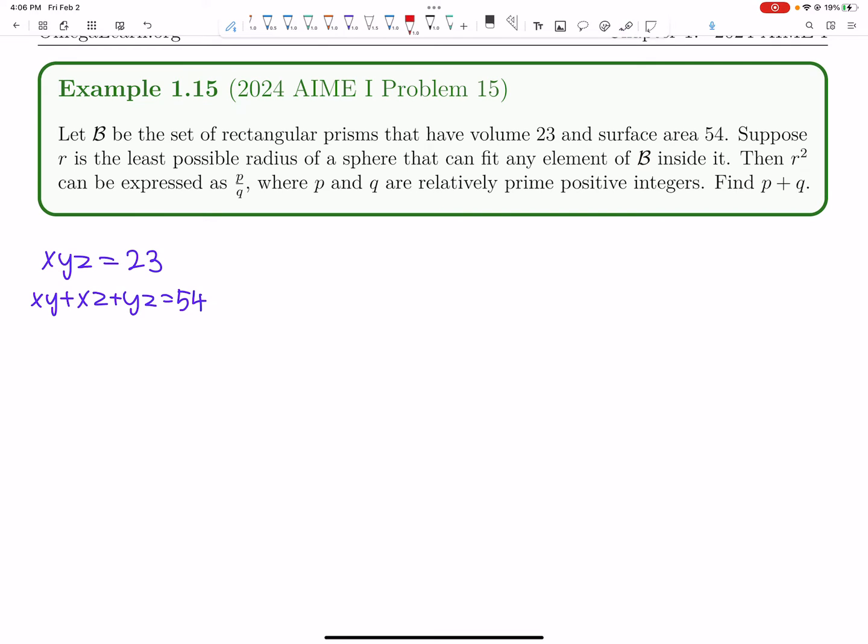so let's just consider any one given rectangular prism, right? For this rectangular prism, what is this radius going to be? For just this rectangular prism, what's the minimum radius?